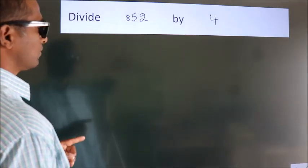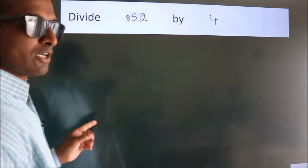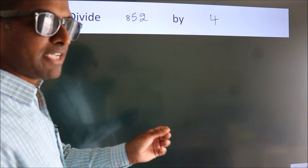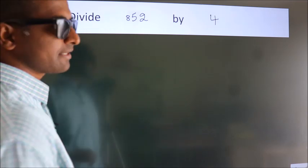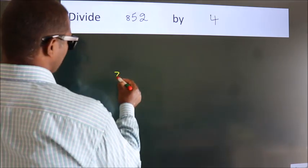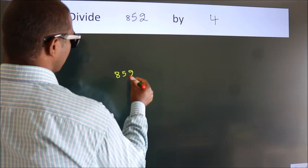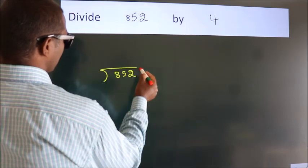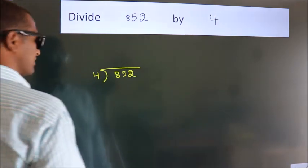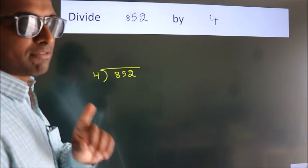Divide 852 by 4. To do this division, we should frame it in this way. 852 here, 4 here. This is your step 1.